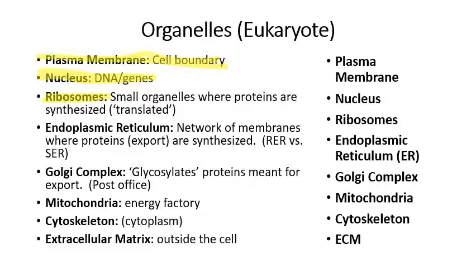You might have heard of mRNA in the context of vaccines recently. The Pfizer and Moderna vaccines are messenger RNA vaccines — instead of injecting you with dead viruses, they inject you with messenger RNA that codes for some of the proteins that the virus has. Instead of injecting viral proteins directly, they inject you with messenger RNA that encodes COVID viral proteins. Those mRNA copies of genes get sent out to the cytoplasm where the ribosomes are.